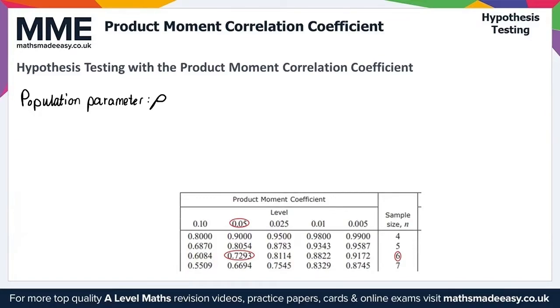We also need to know here the test statistic. So here, we represent this as R. So just the letter R here. And the test statistic is the PMCC of the sample or the data that we have.